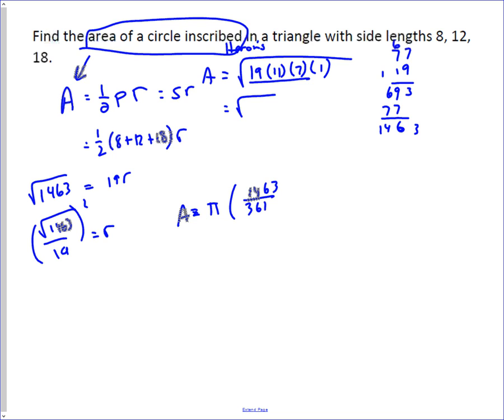But we know that nineteen was a factor of fourteen sixty-three, and that nineteen here is in the denominator, so we can actually take those out and get pi times, well, nineteen out of fourteen sixty-three is seventy-seven. And so the answer is seventy-seven pi over that extra nineteen that is left. So the area of the circle inscribed in that triangle is seventy-seven pi divided by nineteen.